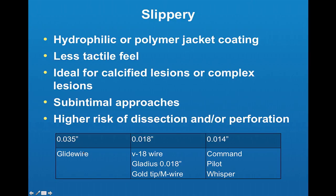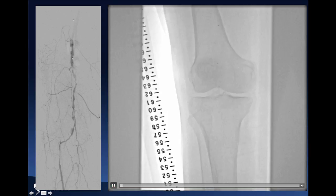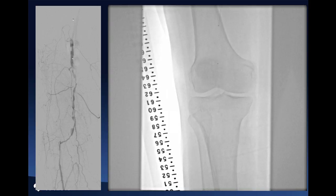The 0.035 glide wire is an example of a slippery wire. For 0.018, examples are the V18 Gladius or Gold Tip M, and for 0.014, the Command, Pilot, or Whisper. Here you can see a very diffuse, complex lesion, and courtesy of colleagues Ethan Corngold and Dr. Sahil Parikh, watch how this wire traverses the lesion very smoothly — a good example of how slipperiness really helps you cross the lesion.